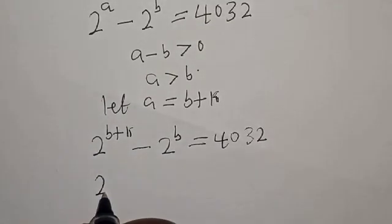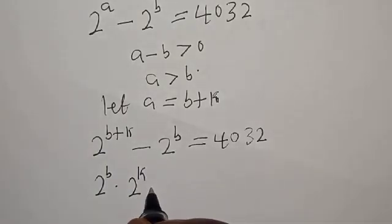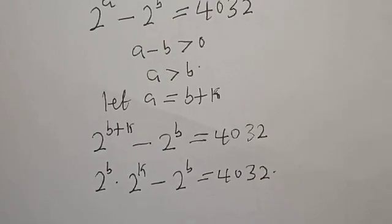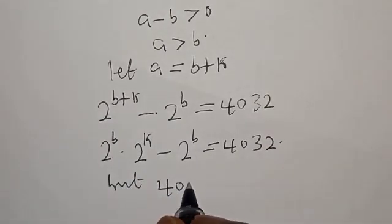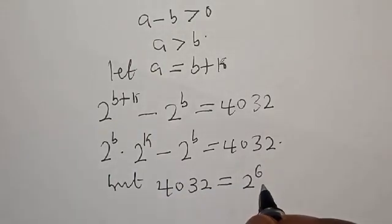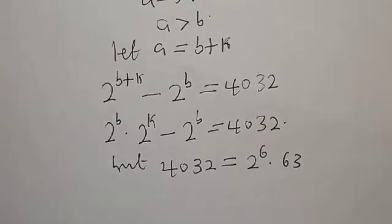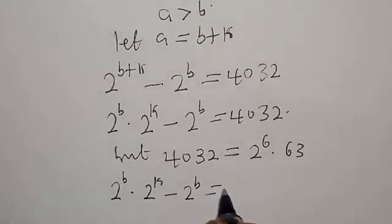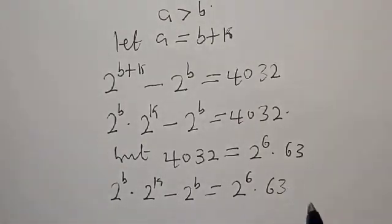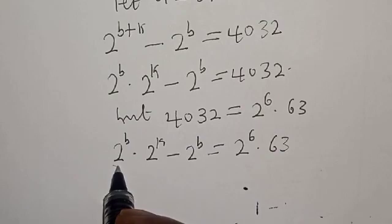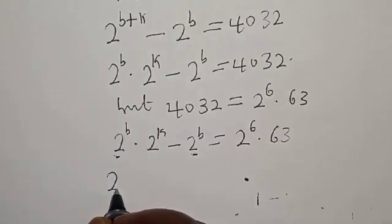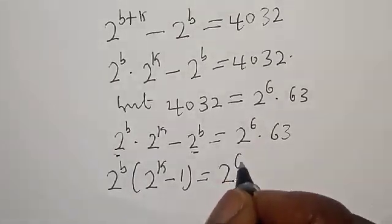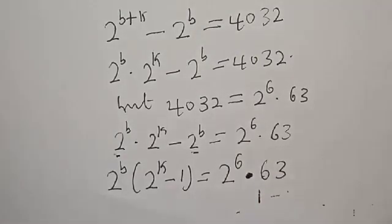Then we have 2 raised to power b multiplied by 2 raised to power k, minus 2 raised to power b, equal to 4032. Now, 4032 is the same as 2 raised to power 6 multiplied by 63. Therefore we have 2 raised to power b multiplied by 2 raised to power k, minus 2 raised to power b, equal to 2 raised to power 6 multiplied by 63. Our left hand side: 2 raised to power b is common, so let's factor it out. We have 2 raised to power b into 2 raised to power k minus 1, equal to 2 raised to power 6 multiplied by 63.